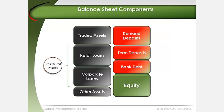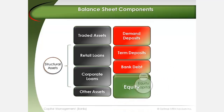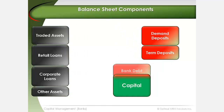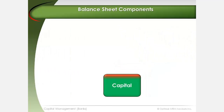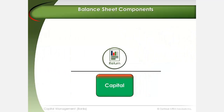The equity portion of a bank's balance sheet is sometimes referred to as bank capital. More accurately, bank capital is a disproportionate sum of debt and equity capital. It is incumbent on a bank to strategically optimize the allocation of its capital within structural constraints in order to maximize its return on equity and return on capital.